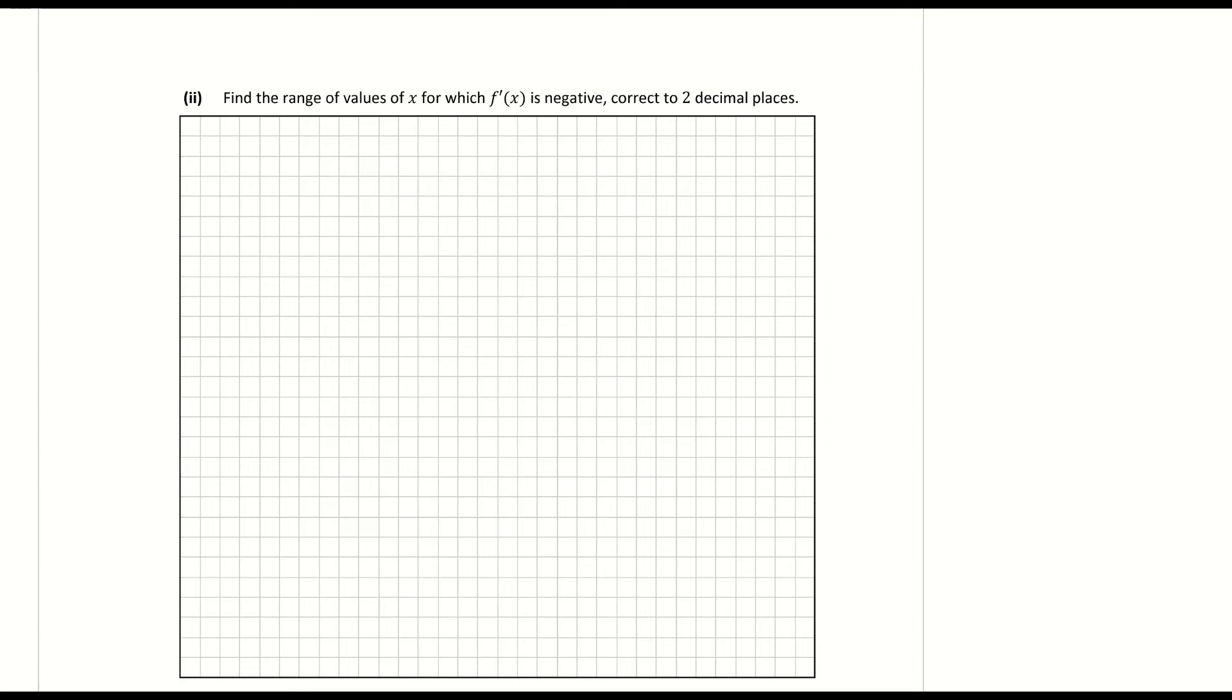Part 2. Find the range of values of x for which f dash of x is negative. So this is the derivative is negative. So my derivative from the previous part of the question was f dash of x is equal to 6x squared minus 42x plus 40 and I'm looking for less than 0. Now I haven't factorized the derivative in the previous part so I need to factorize this now.